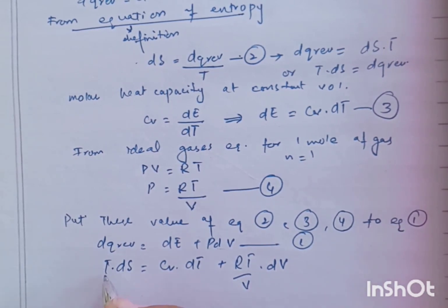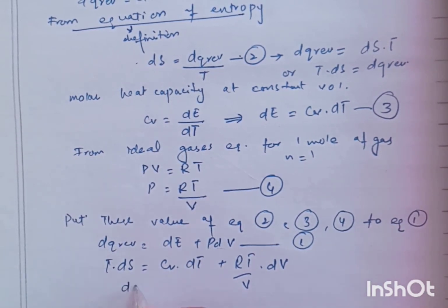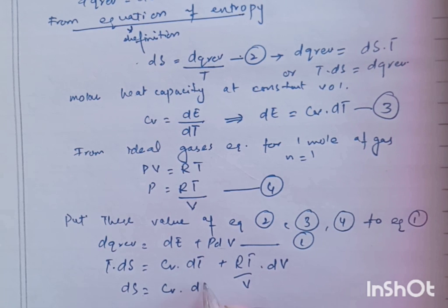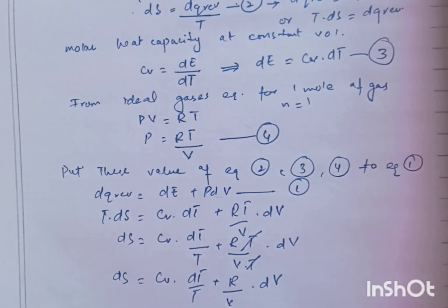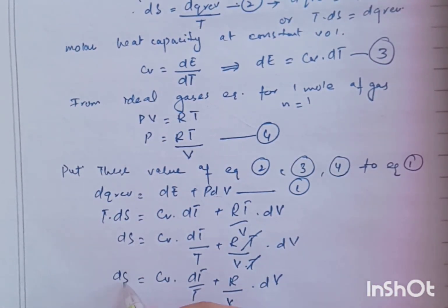Now, brought this T to the right side. CV DT over T plus RT into V into T into DV. This is cancelled out. Then DS equals to CV DT over T plus R over V into DV.